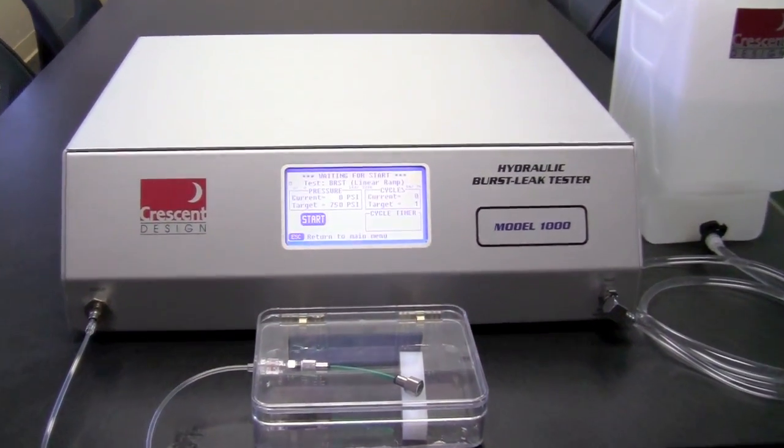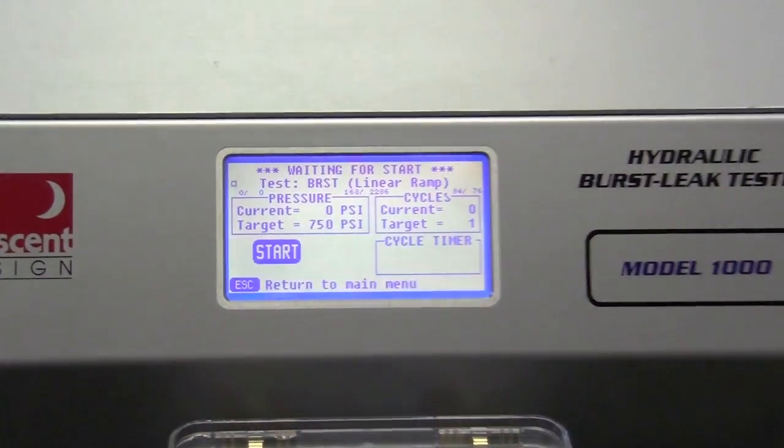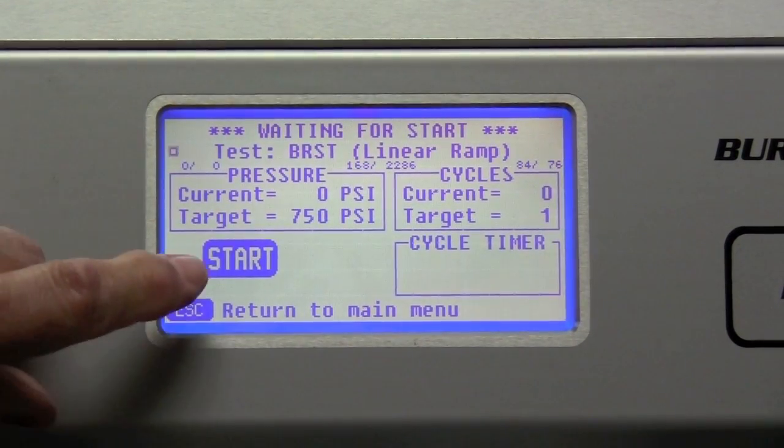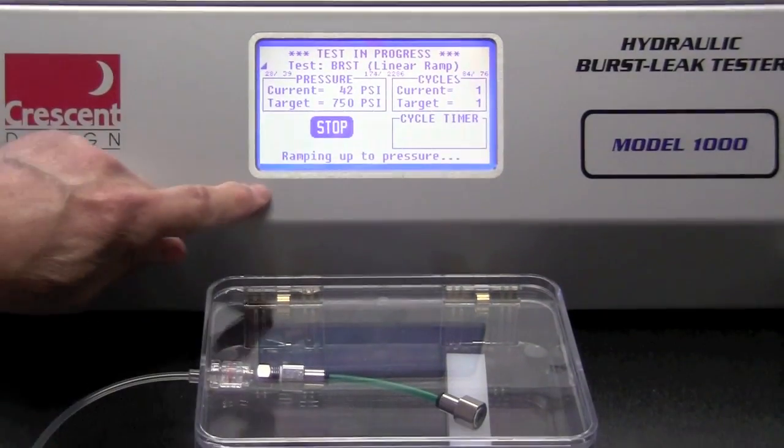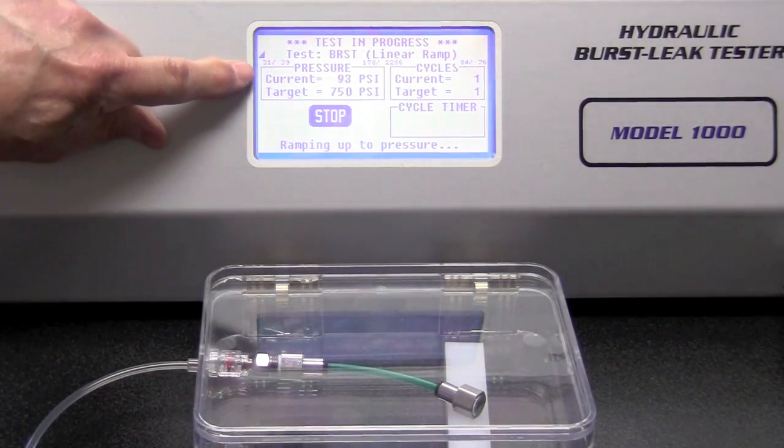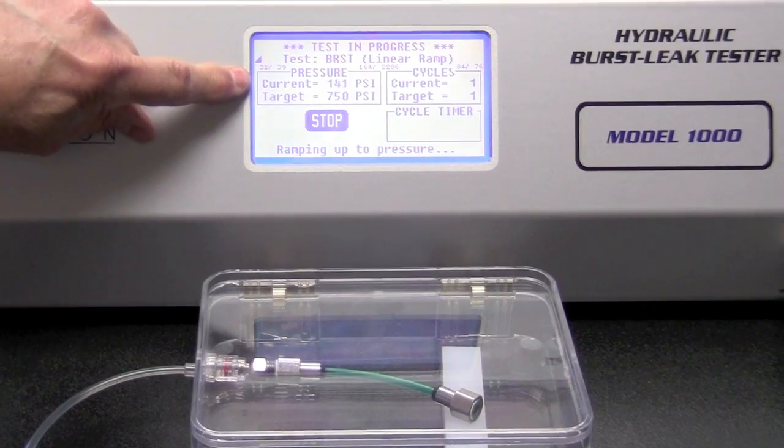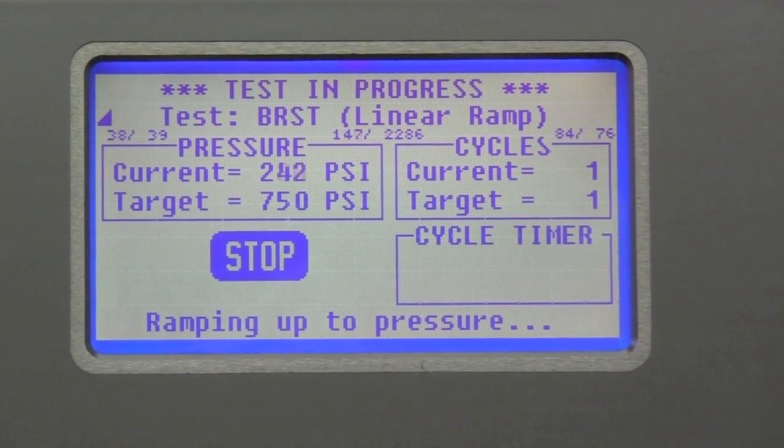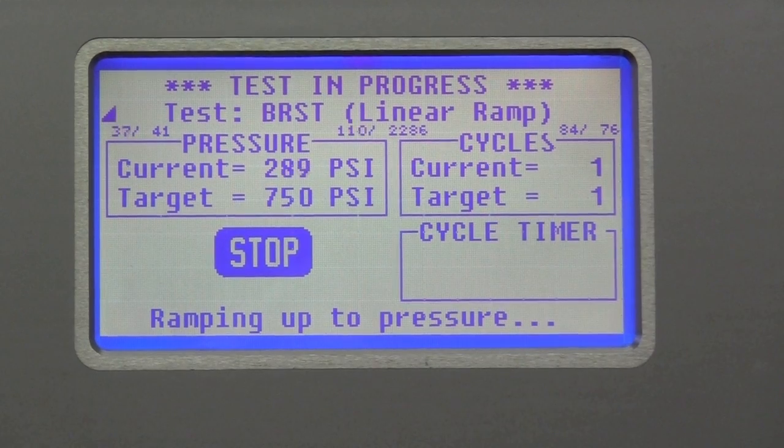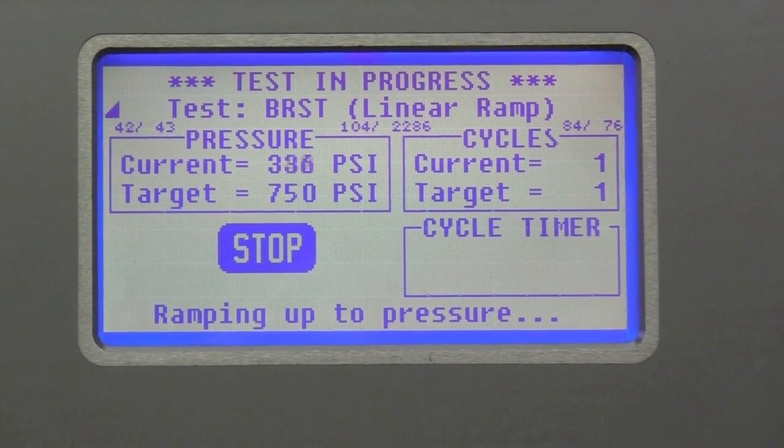And I'm going to put this in this container so that I don't get wet. And now we're ready to start the test. So I'm going to push the start button. And you can see that it's saying ramping up to pressure. You'll notice the current pressure is increasing. I believe this tubing will rupture somewhere around 550, 520 PSI.